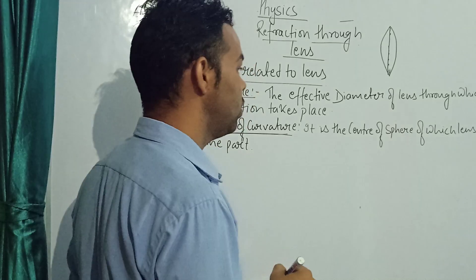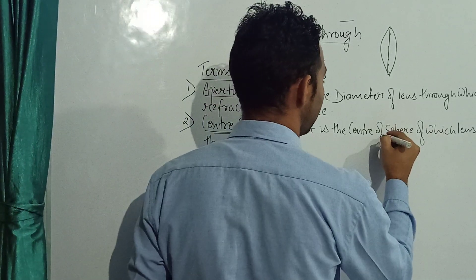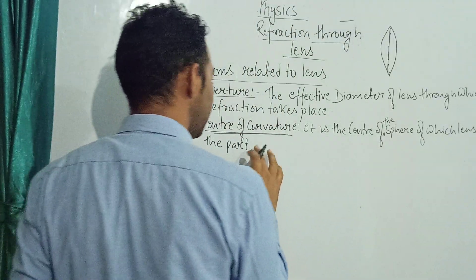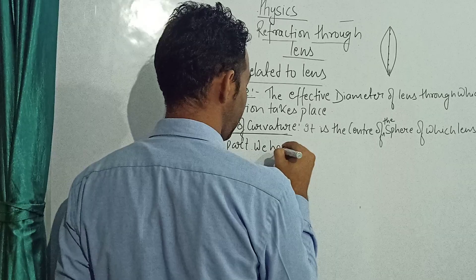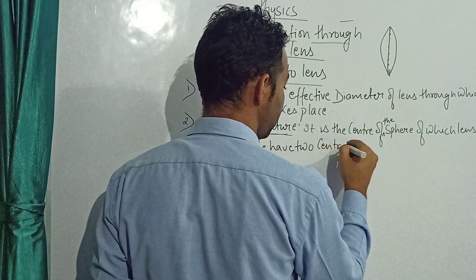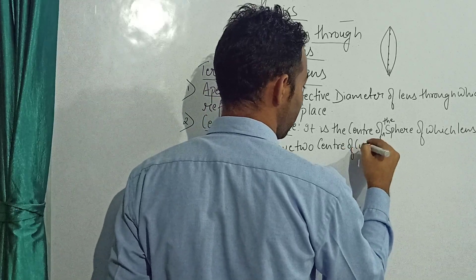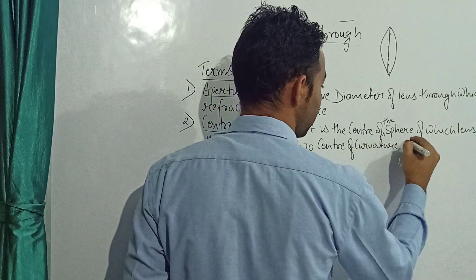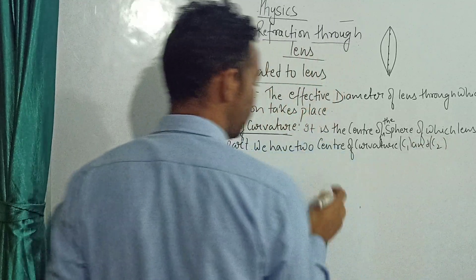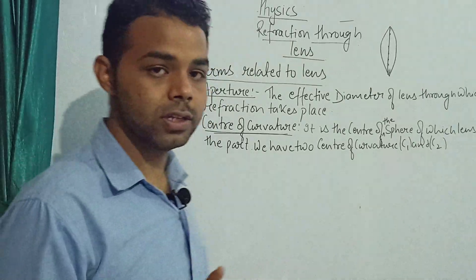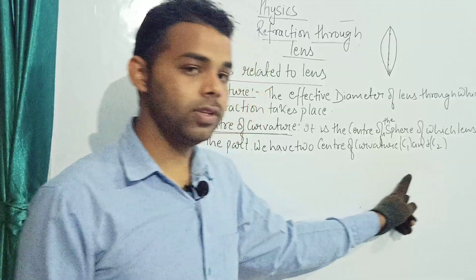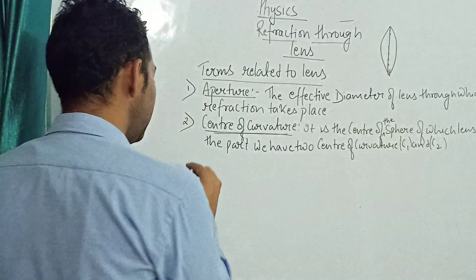The centre of curvature is the centre of the sphere of which the lens is a part. We will have two centres of curvature, C1 and C2.